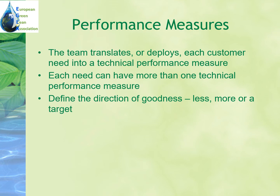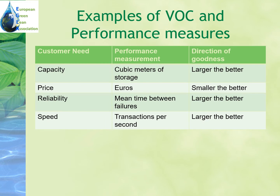You have to remember that each need can have more than one technical performance measure, meaning one requirement might lead to different types of measures or performance indicators. You should also define the direction of goodness — meaning, is it best to have less, more, or what's the target level you should reach? Here are a couple of examples: if the customer wants more capacity, larger is better and it can be measured, for example, in cubic meters of storage.